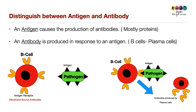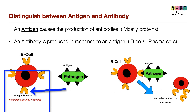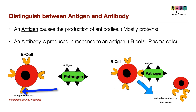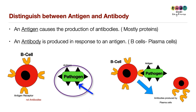A B cell has antigen receptors, which are membrane-bound antibodies. Each B cell's antibodies are specific to that particular B cell. A pathogen carries a specific antigen that a matching B cell can recognise.